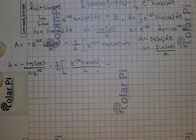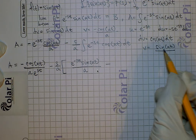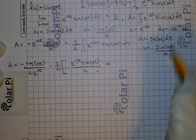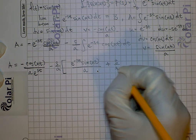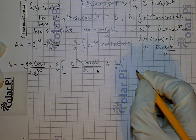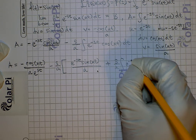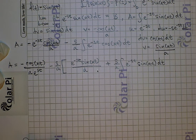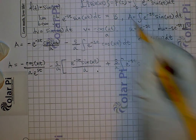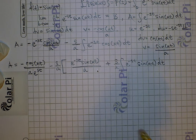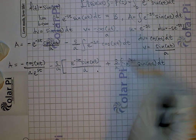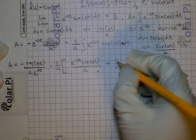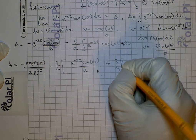Minus the integral of v du — v is positive this time but du is still negative, so we say plus, and again we factor out s over a, giving s over a times the integral of e to the negative st times sine of at dt. Wait — deja vu — because this integral here is also capital A. So I could just erase this integral and write s over a times capital A.